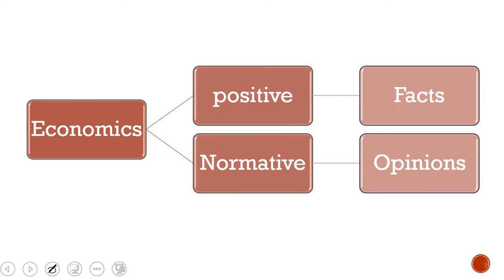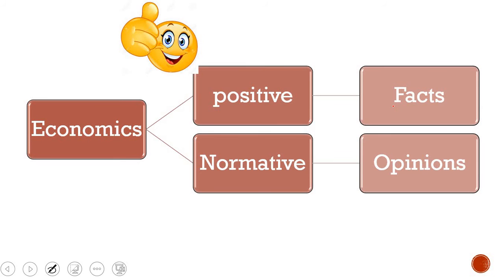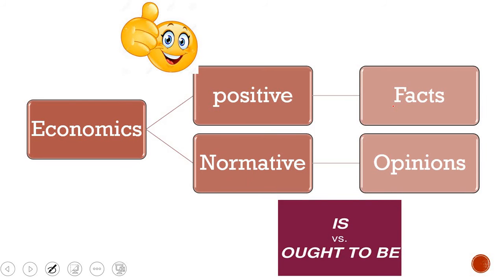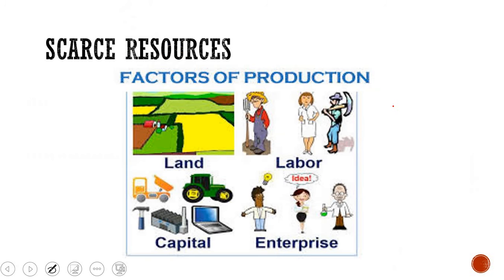Next, we look at positive economics versus normative economics. Positive economics deals with facts, whereas normative economics deals with opinions — what the economy should be like. So here you are looking at what is versus what ought to be.